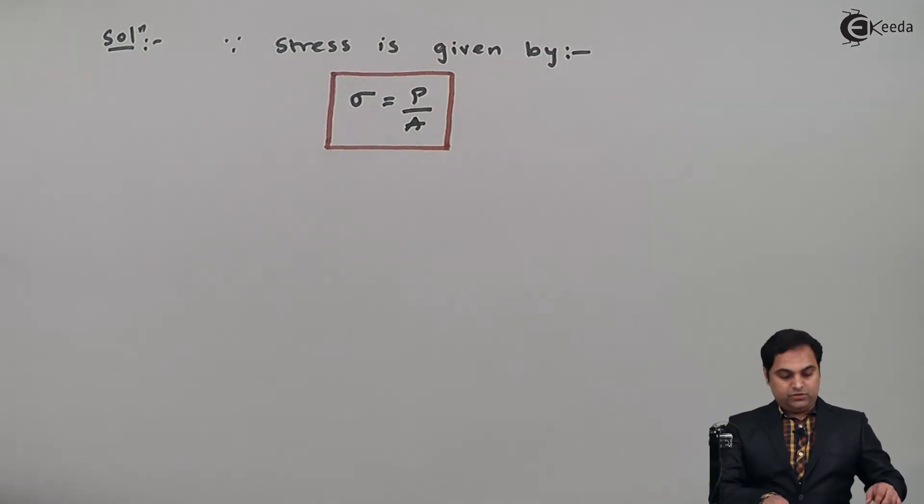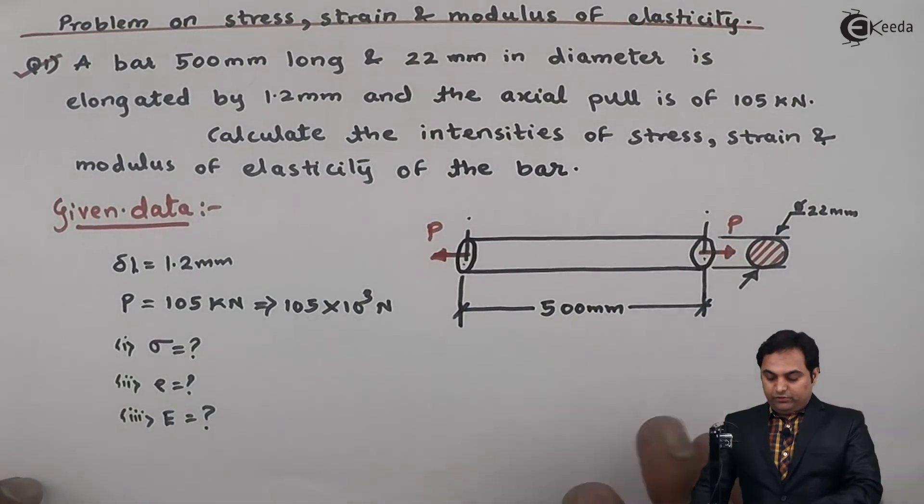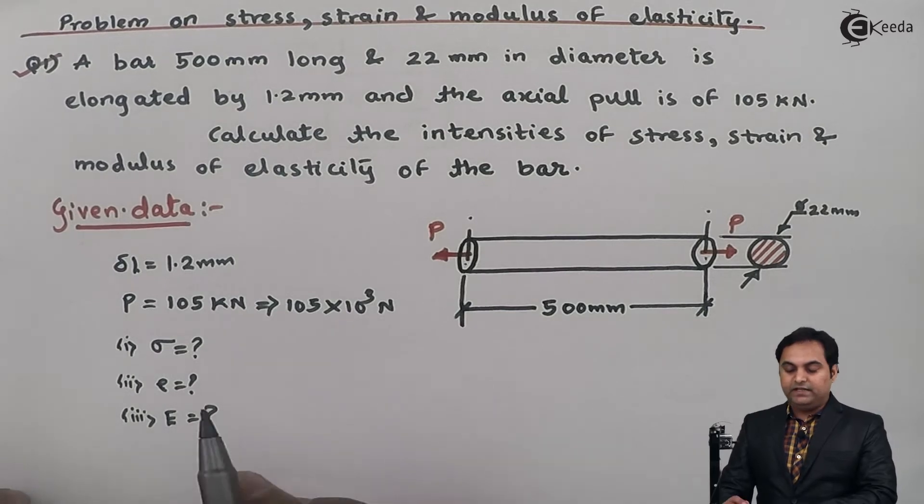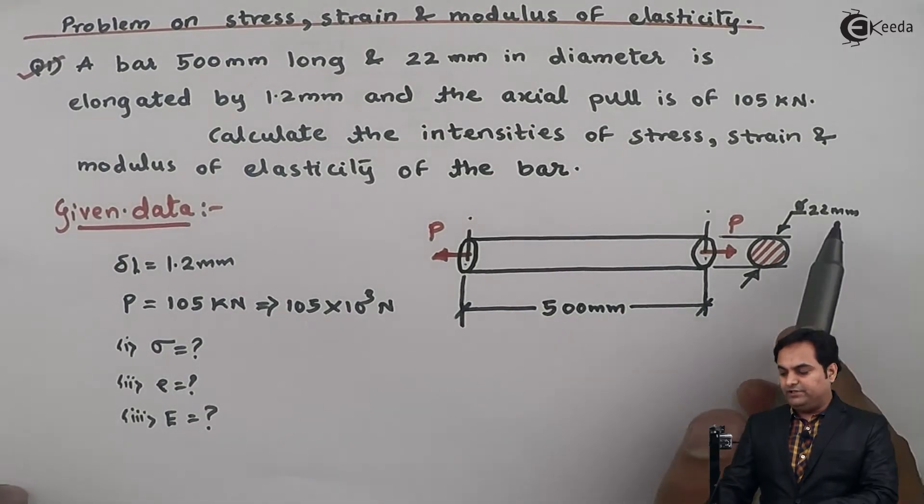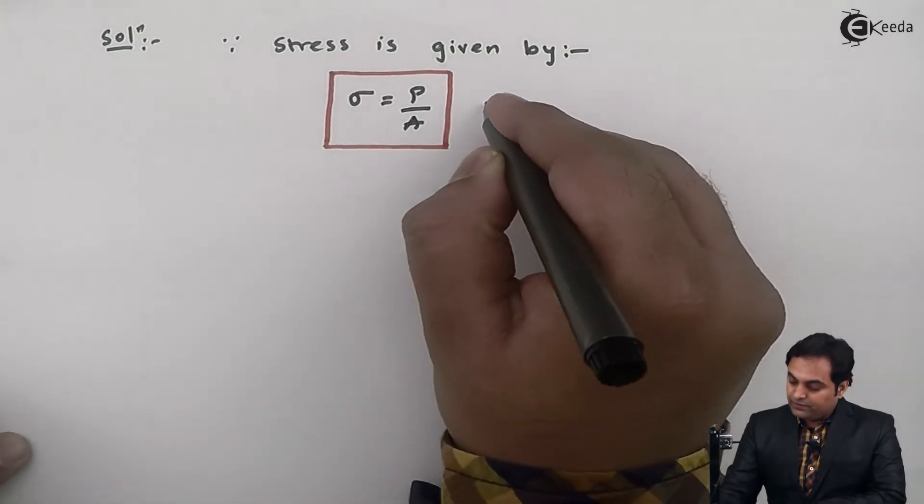Now when we look into this question, P is given as 105 × 10³ Newton, and area we can get it from the diameter. Diameter is 22 mm.